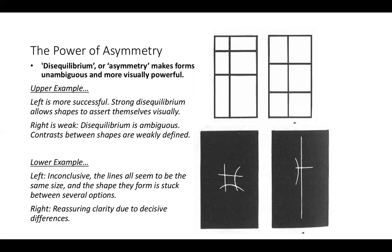You're not quite certain if it's off-centre or centred, and that's problematic. Whereas the one on the left is very, very clear. Another example is the two at the bottom on the right. The left one is the weaker one — the lines are inconclusive, the shape doesn't choose any option and seems stuck in an in-between place. Look at the far right — there's a reassuring clarity due to the decisiveness of those differences. These are examples from a psychological test from the 1940s by Maitland Graves, an American professor.